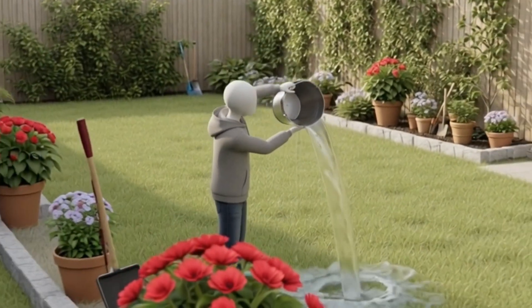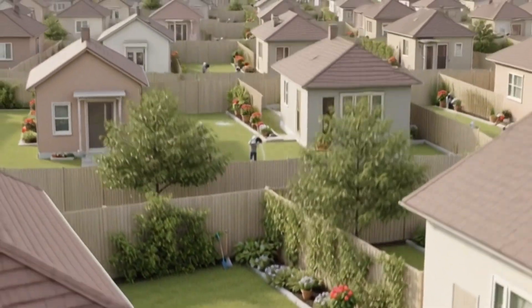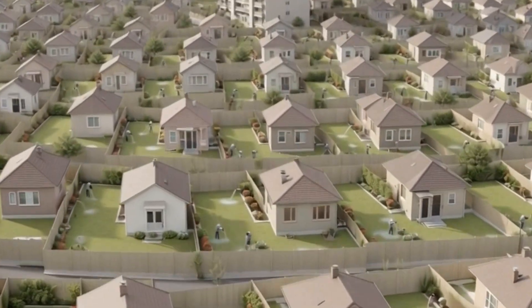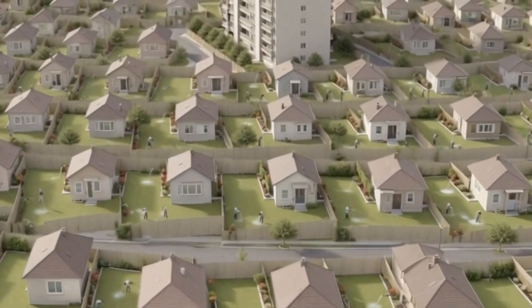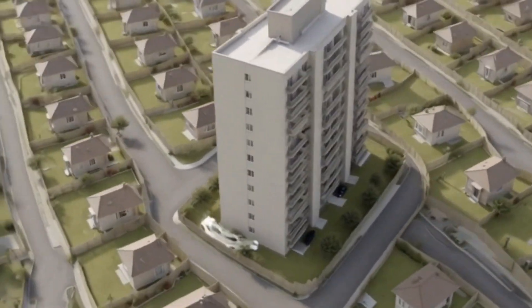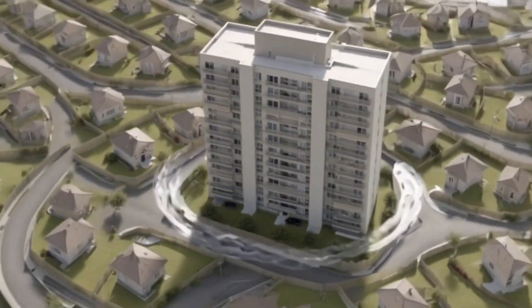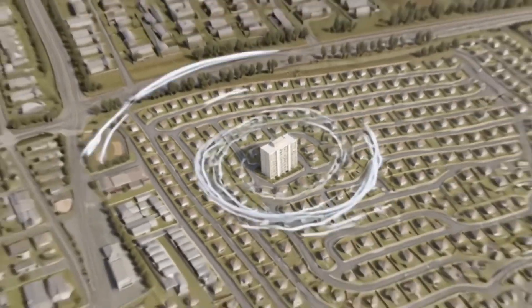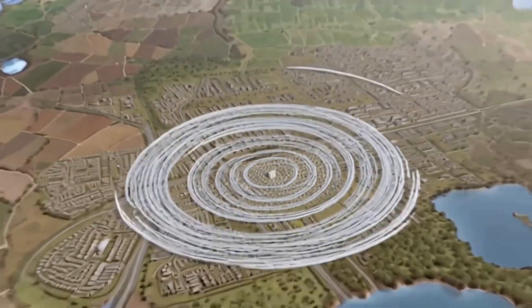One person doing it changes nothing. Millions doing it change something measurable. Picture an apartment building with 50 homes. Each empties one half-full bottle a week. About 200 liters a year. Multiply that across cities and countries. Billions of liters back in motion.